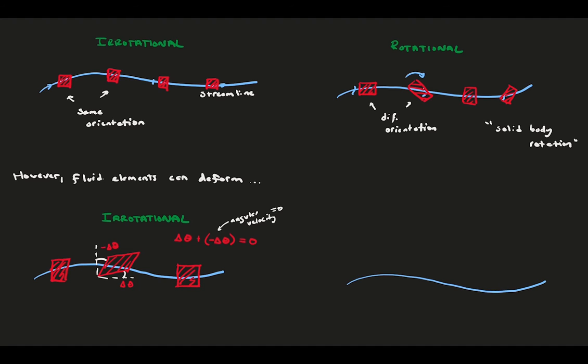And now, let's consider a last case. The same streamline again, with a fluid element traveling along it, but under a different type of distortion. Now, the bottom and top sides of our element have not changed orientation, but the left and right sides have rotated counterclockwise, so they have a positive delta theta. Summing up all the sides, we would find a non-zero net change in the side angles, which means we have a non-zero angular velocity, and therefore a rotational flow.